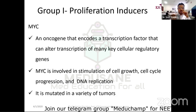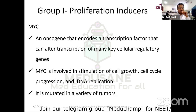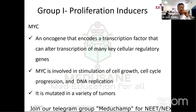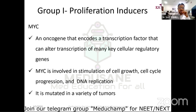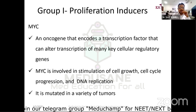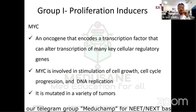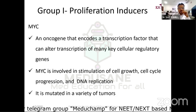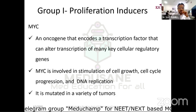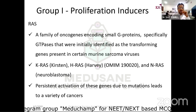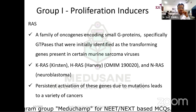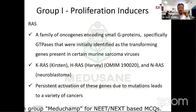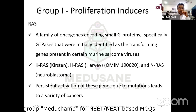Group 1 and Group 2 are most important academically. Group 1 examples are MYC and RAS. The MYC gene encodes a transcription factor that can alter transcription of many key cellular genes. It is involved in stimulation of cell growth, cell cycle progression, and DNA replication, and many tumors carry MYC mutations. RAS — from Rous sarcoma — is a family of GTPases initially identified as transforming genes in murine sarcoma virus. K-RAS, H-RAS, and N-RAS are members; N-RAS is involved in neuroblastoma. Persistent activation of these genes leads to various cancers.